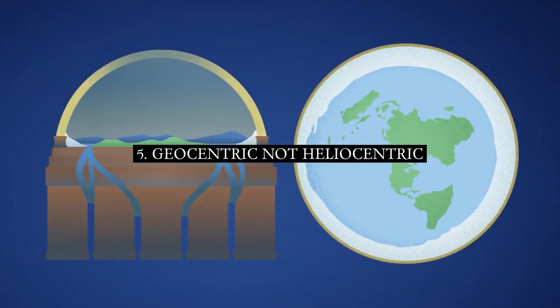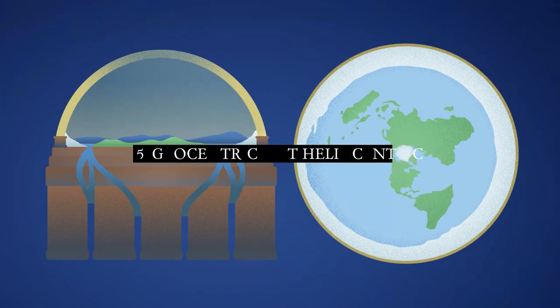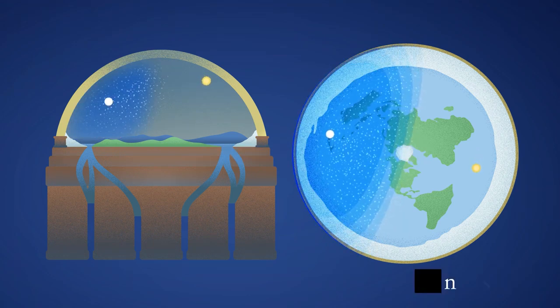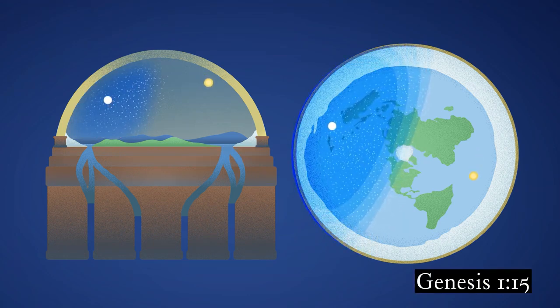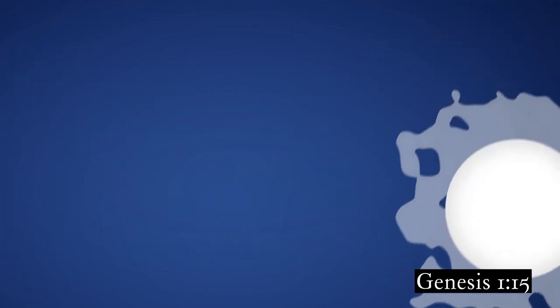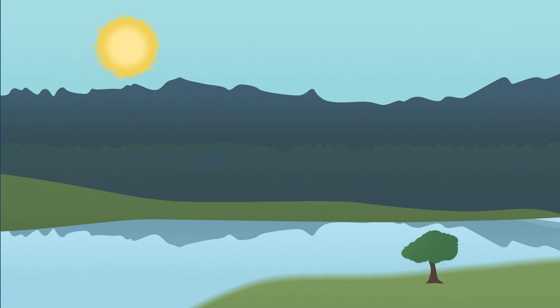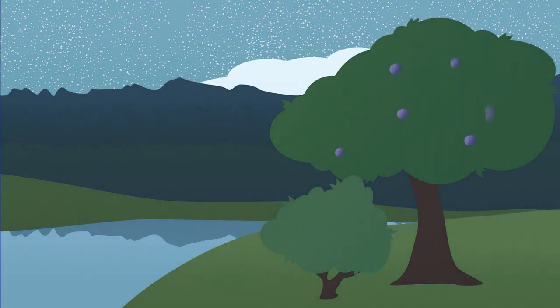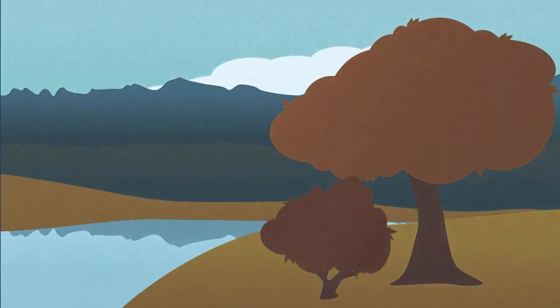Number five: Geocentric, not heliocentric. According to Scripture, the sun, moon, and stars are not millions of miles away, but are simply lights in the firmament of the heaven. Far from being a cluster of space rocks and burning gases roving in their own courses, the Bible teaches that these mysterious luminaries were made for the sole service of the earth, to give light upon the earth.